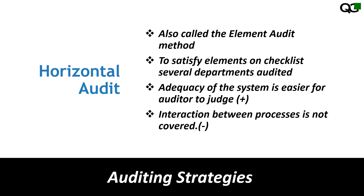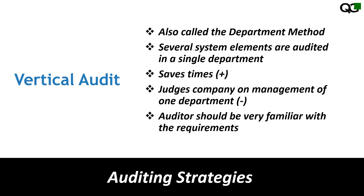The horizontal audit is also called the element audit method. Since you're auditing a specific element, it is much easier for the auditor — you know your checkpoints and move through different departments checking those elements. However, the disadvantage is that you're only looking at a specific element, so you miss the interaction between different elements.